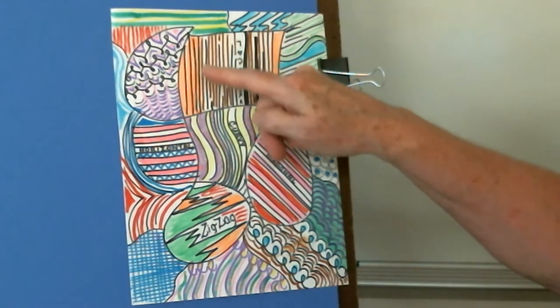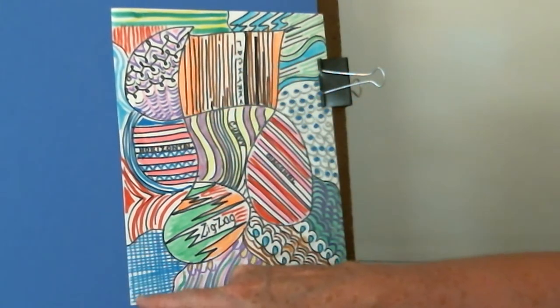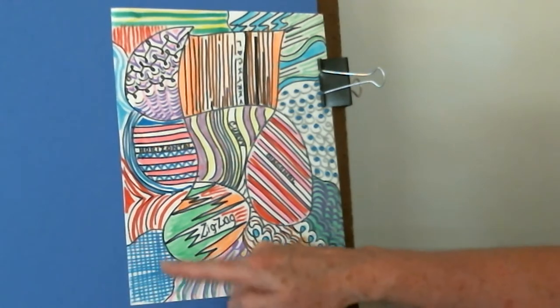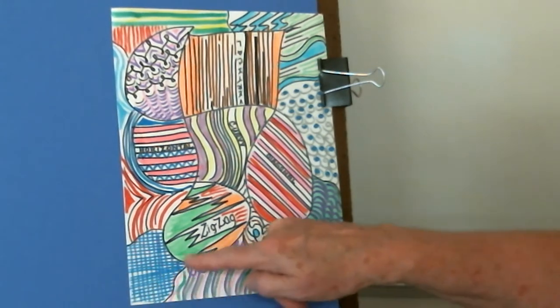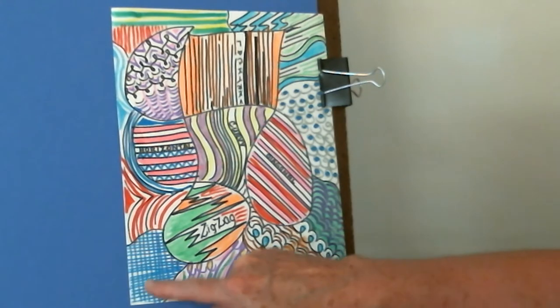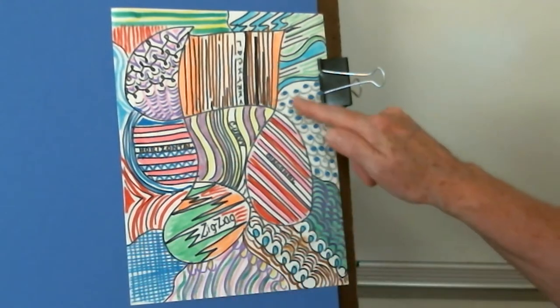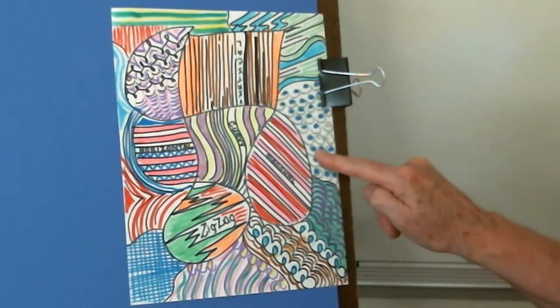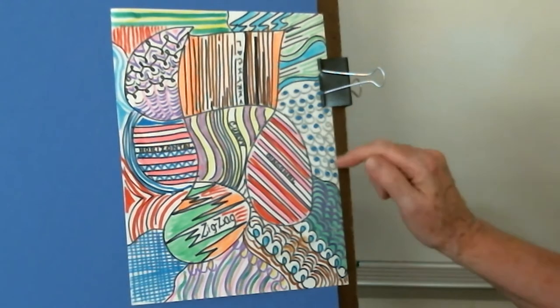These lines right here create a pattern. The patterns that go one way and then patterns that crisscross make a pattern. This is a pattern of color and line.